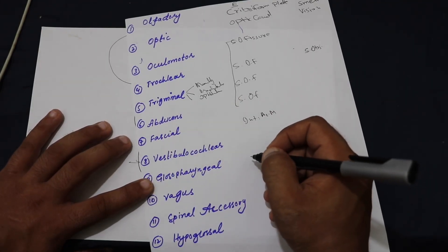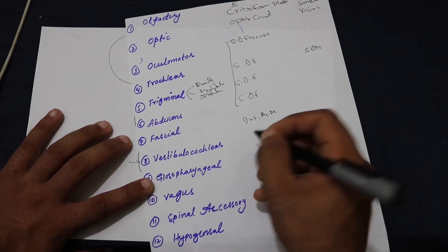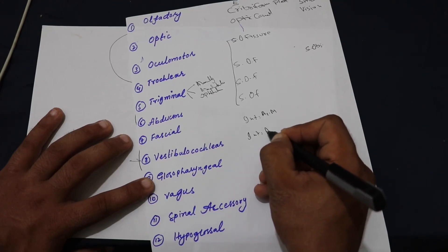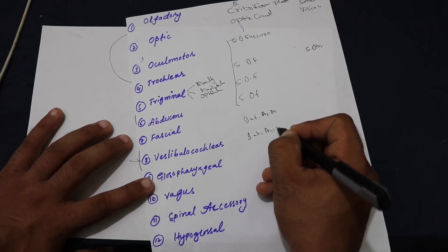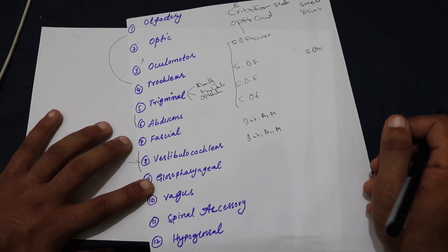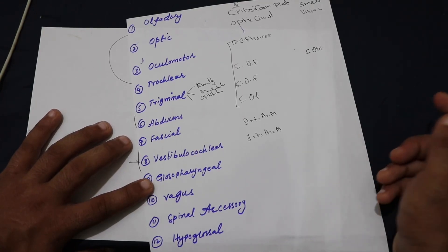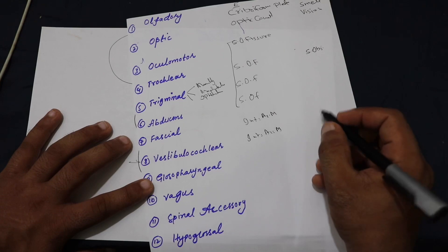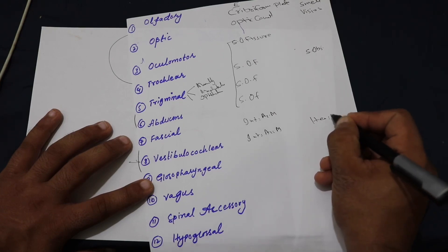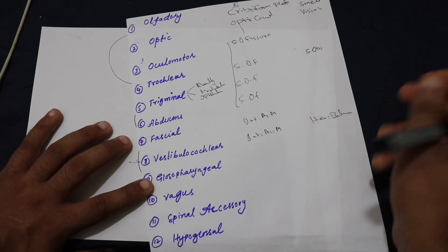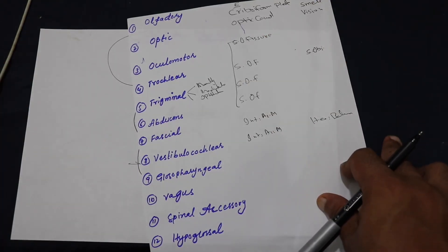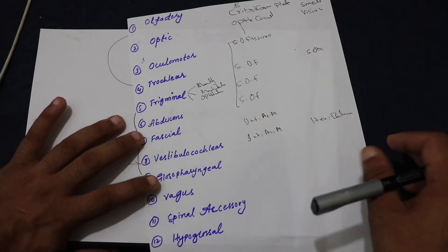Number eight is the vestibulocochlear nerve, which also exits from the internal acoustic meatus. It is a purely sensory nerve, and its function is hearing and balance.